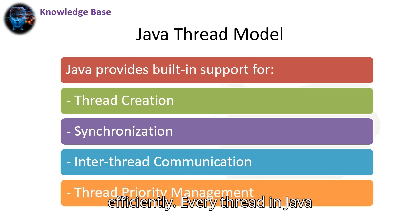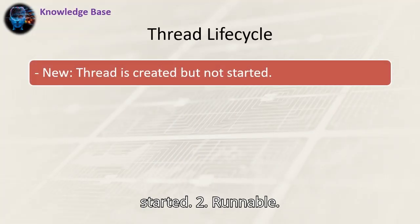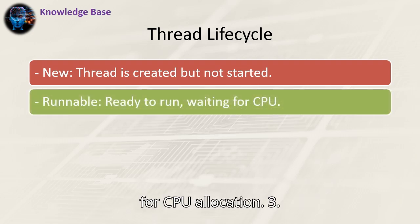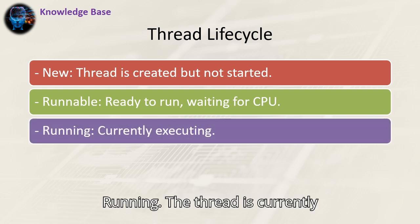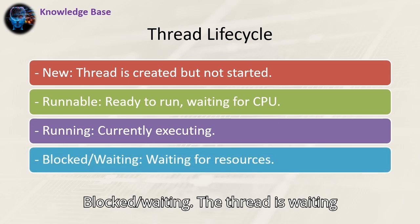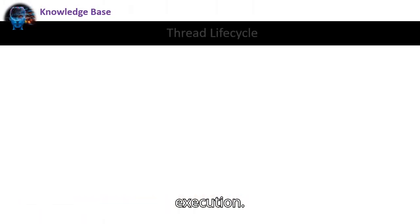Every thread in Java follows a life cycle. 1. New: the thread is created but not started. 2. Runnable: the thread is ready to run but waiting for CPU allocation. 3. Running: the thread is currently executing. 4. Blocked/Waiting: the thread is waiting for resources or input. 5. Terminated: the thread has completed execution.